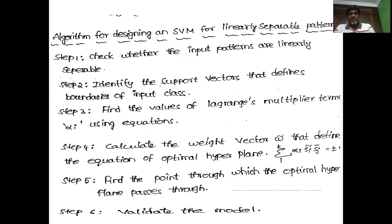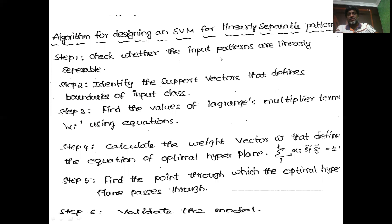Having discussed the fundamentals of linear SVM, let us see the algorithm for designing an SVM when the input patterns are linearly separable. The algorithm involves several steps. Step one: check whether the input patterns are linearly separable or not. We try to draw a straight line to separate the input patterns into exactly two classes. If we succeed, we can say they are linearly separable and design the linear SVM.